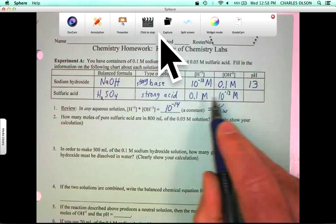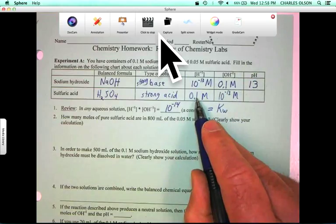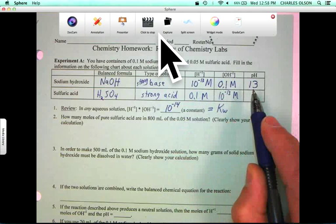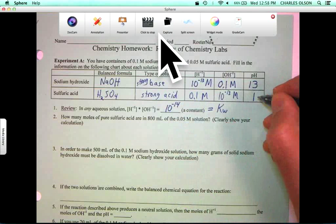And with the concentration of H plus 10 to the minus 1, the pH must be 1.